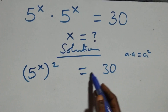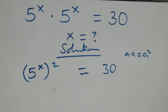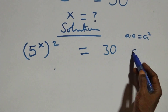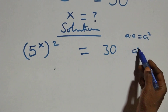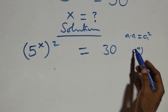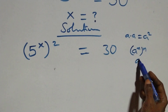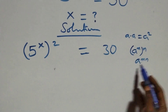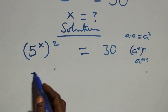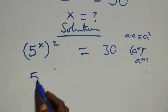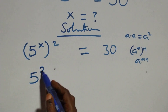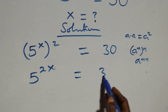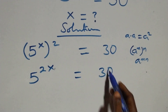...30 on this side. This also follows when we have a raised to power n times a raised to power n, which is the same thing as a raised to power 2n. So the powers multiply and we have 5 raised to power 2x equals to 30.